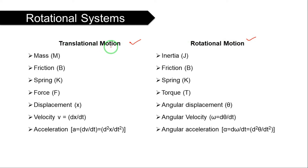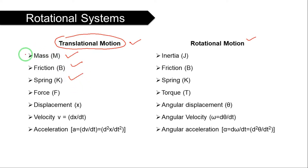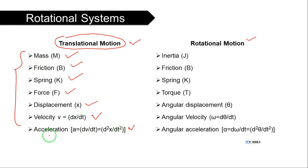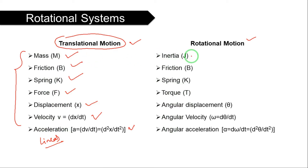There are two systems in mechanics. The translational system consists of mass, friction, and spring — these are the opposing force elements. The applied force and displacement is X, velocity V = dx/dt, and acceleration — these are all linear elements, meaning linear displacement, linear velocity, and linear acceleration.